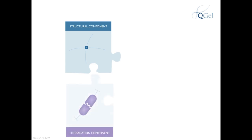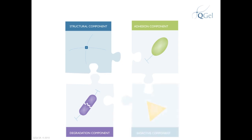The second piece is the degradation component — an amino acid sequence that can be enzymatically degraded. The third piece is the adhesion component, which stimulates cells to adhere to the matrix. The fourth piece is the bioactive component, which is optional, and may be incorporated to allow you to trigger certain cellular processes.